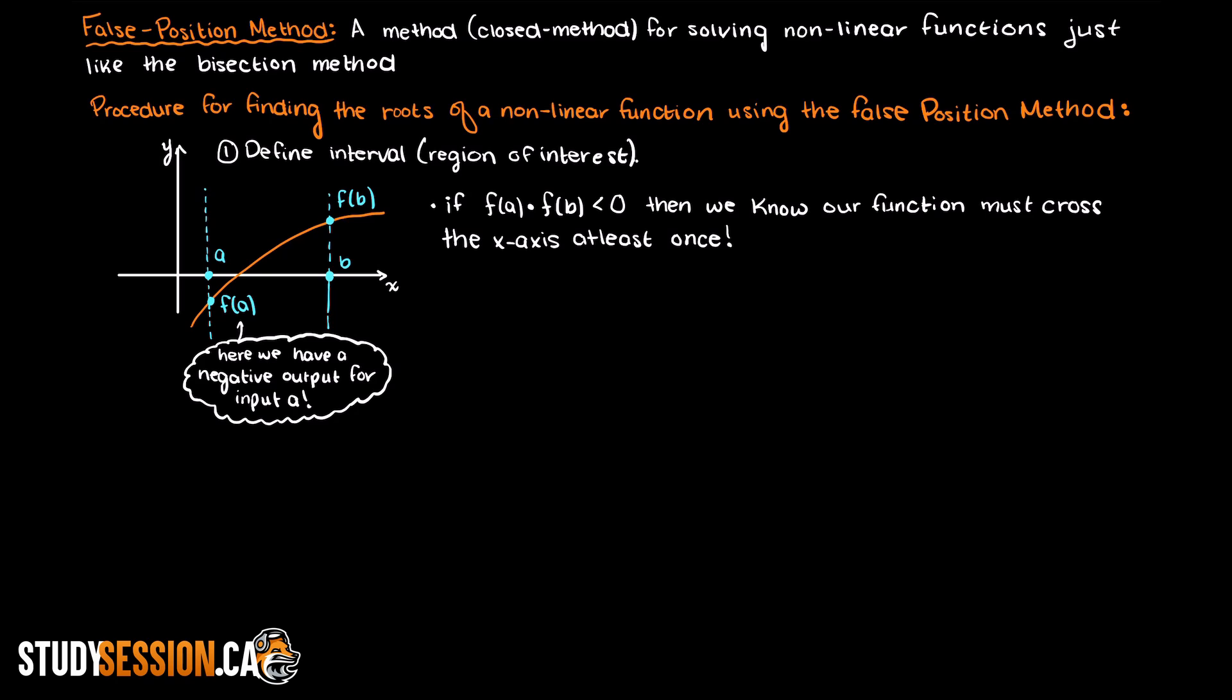One common method for validating this is multiplying the two outputs together, as we need one positive and one negative value. The product of these two outputs will never be greater than zero.